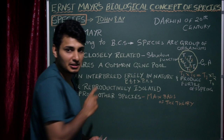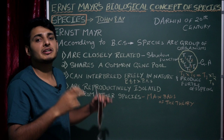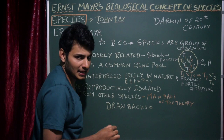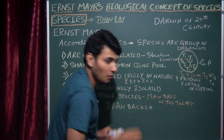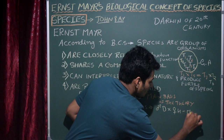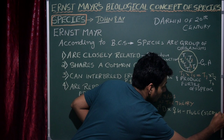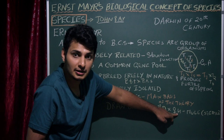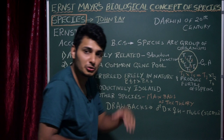However, BCS has certain drawbacks — some exceptions exist. For example, a mule is the offspring of a male donkey and a female horse. Though the mule is sterile, it is produced. According to the fourth theory, donkey and horse should not mate since they are different species, but it happens in nature. This disproves that theory.